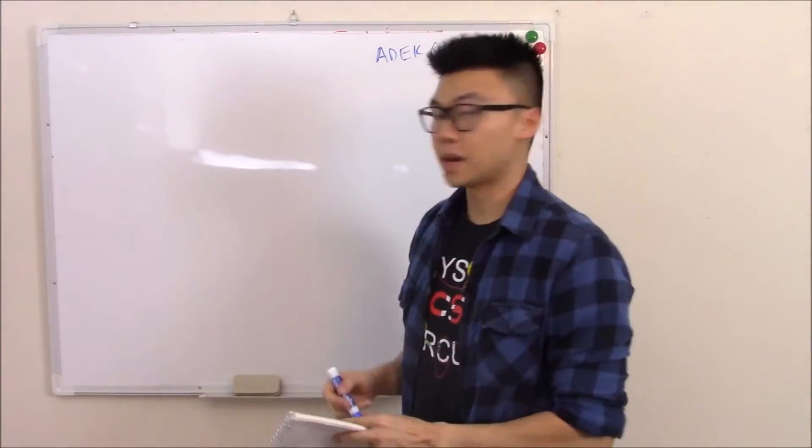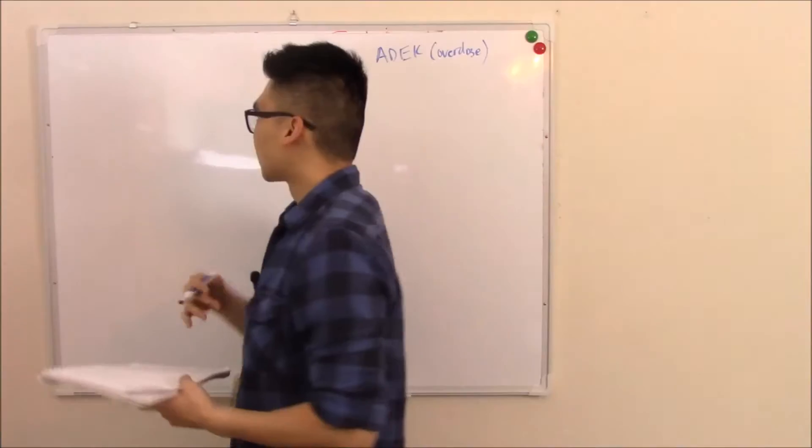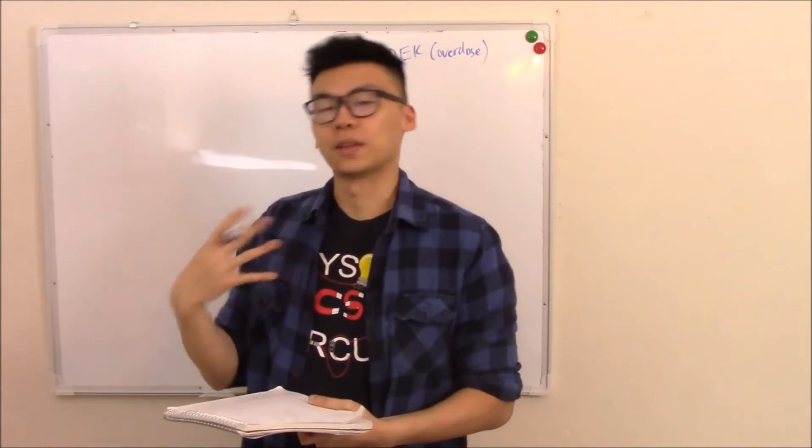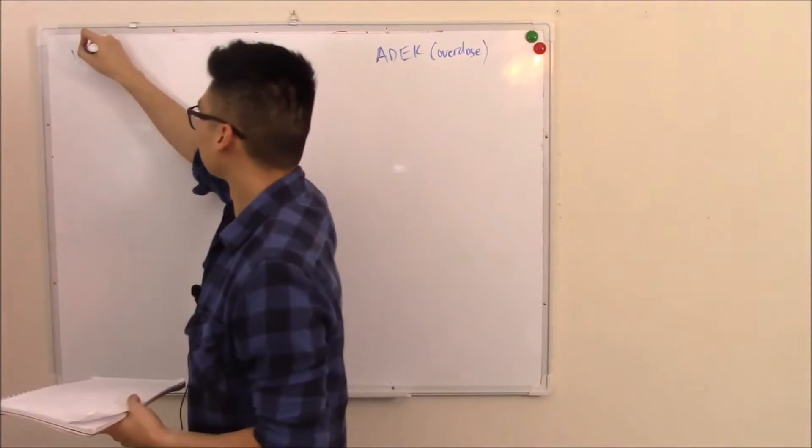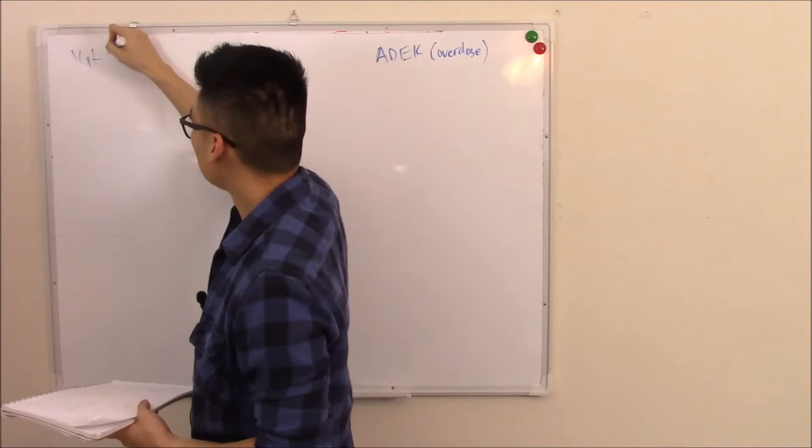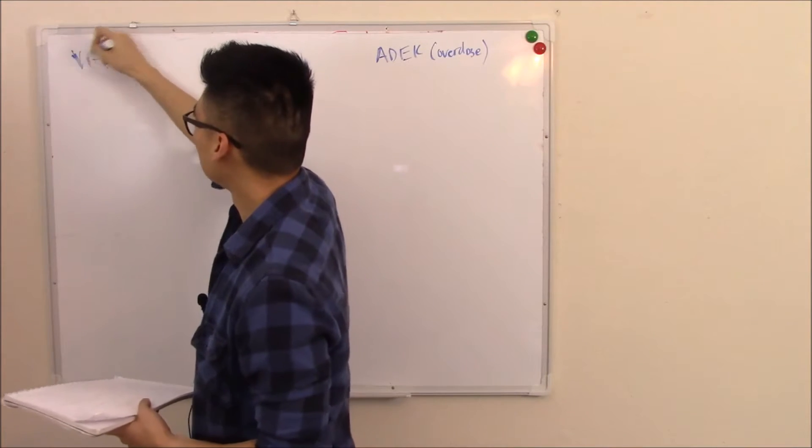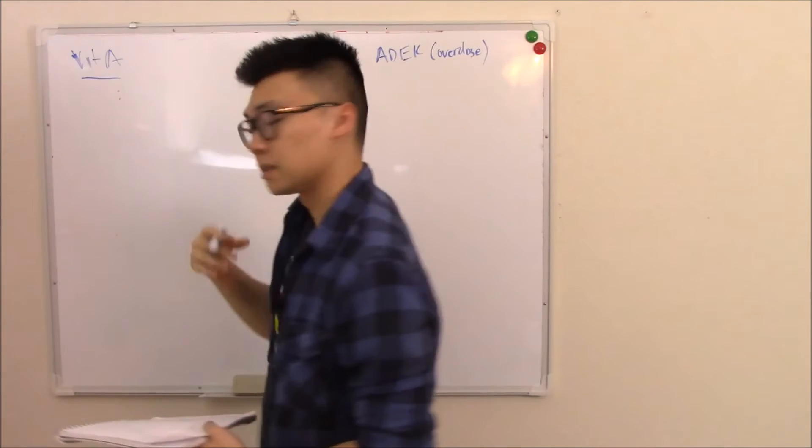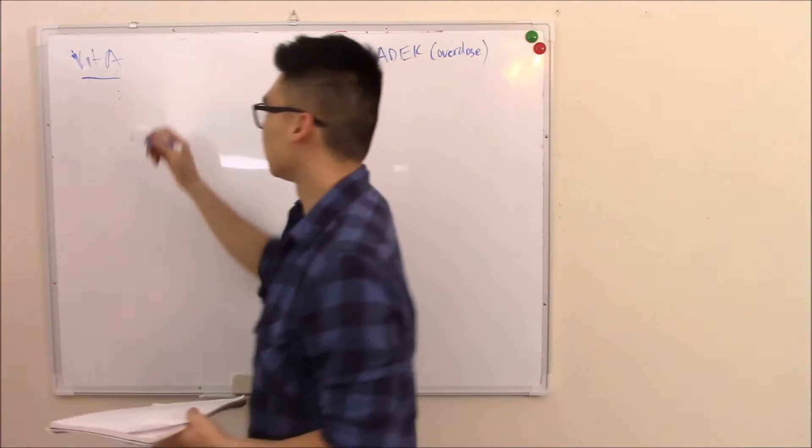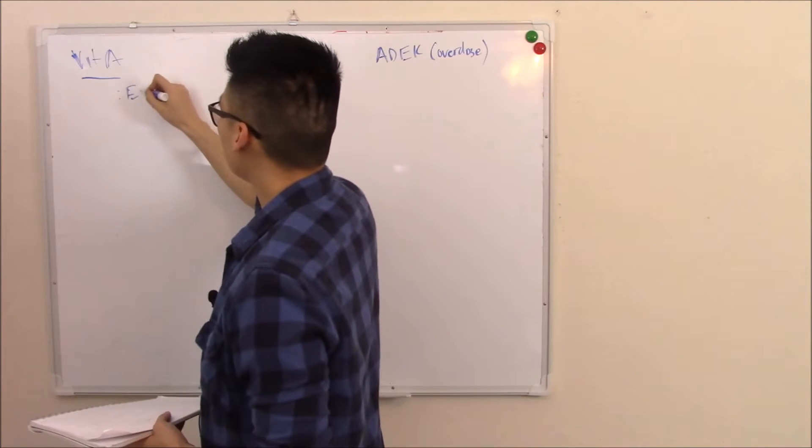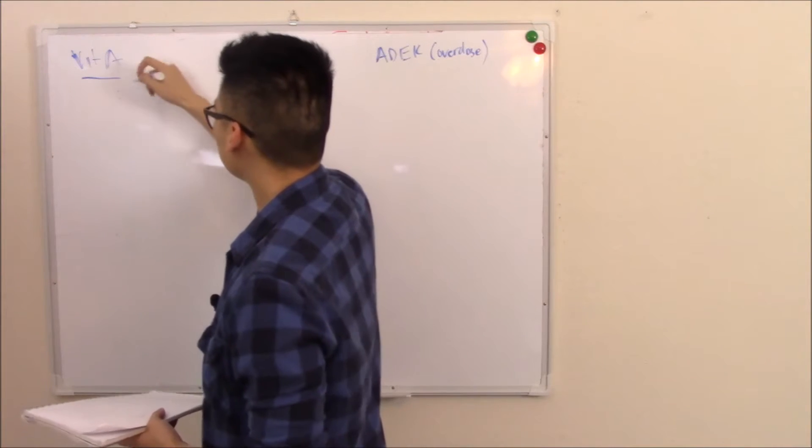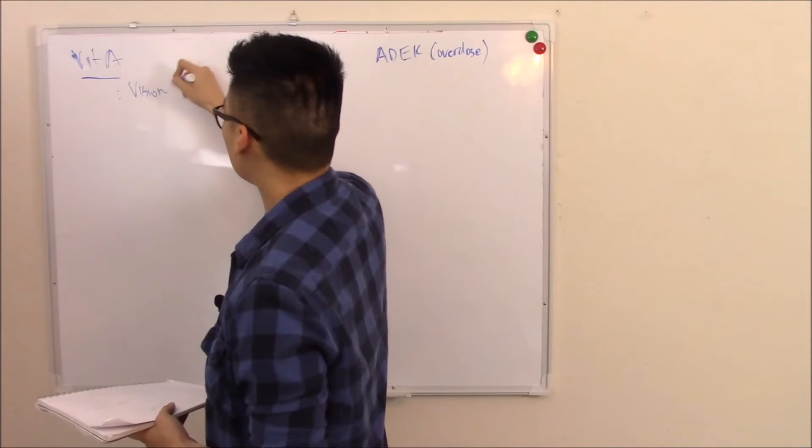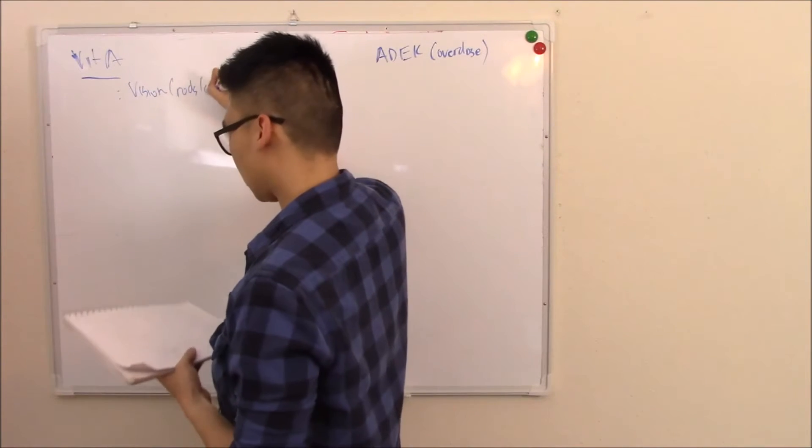We'll start with vitamin A. Vitamin A is found in things like carrots and has a ton of different functions. It's seen in your eyes, in your rods and cones, so needed for vision.